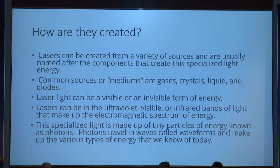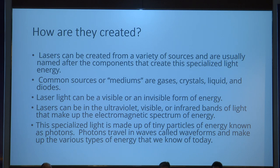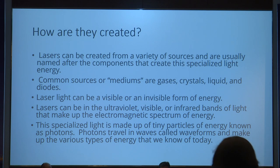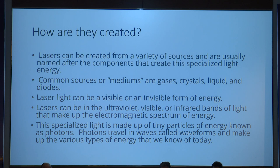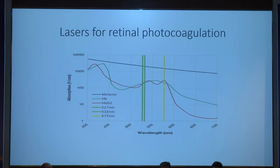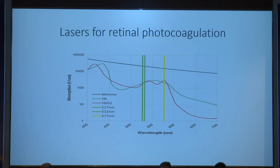How are lasers created? The first time it was created using ruby, so it was called the Ruby laser. Basically, lasers are named after the medium used to create them. Like we have argon laser, krypton laser, and carbon dioxide laser. They span the electromagnetic spectrum from ultraviolet to infrared. The laser we use in retina is in the visible range. Initially we used blue-green laser, with maximum absorption between 488 to 514 nm. Later, 532 nm was also used, and today the double-frequency YAG laser at 532 nm is the standard for retinal photocoagulation.